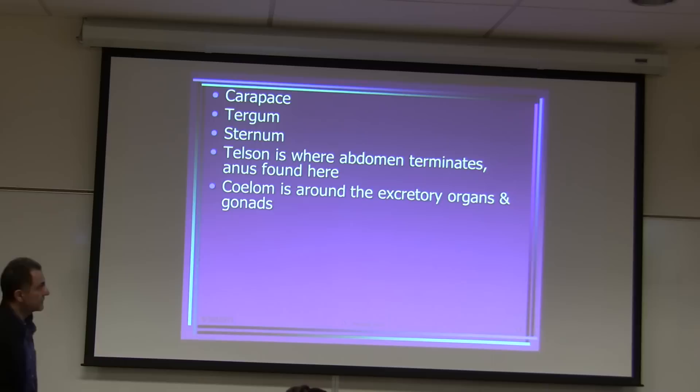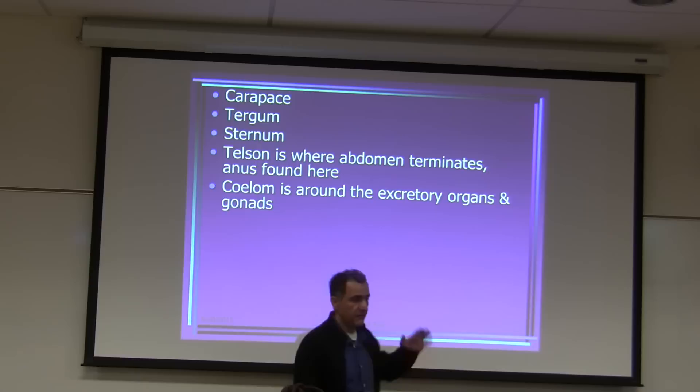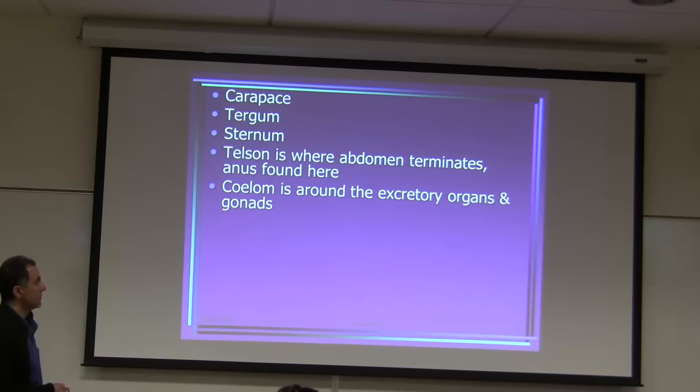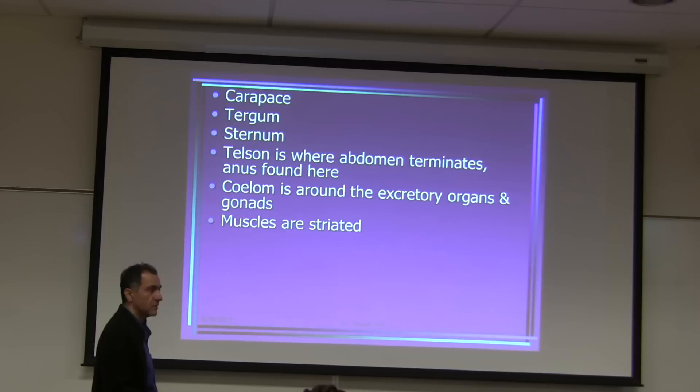The telson is where the abdomen terminates, and the anus is found there. The coelom is around the excretory organs and gonads — compartmentalized, not from head to toe like annelids. Muscles are striated; when you eat lobster at Red Lobster, you're eating the skeletal muscle of these animals.